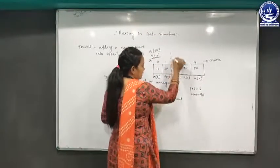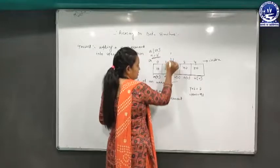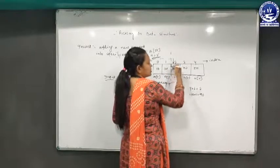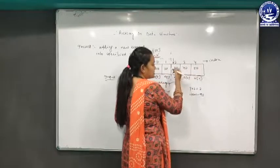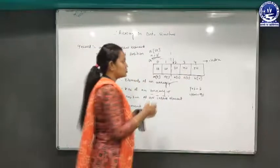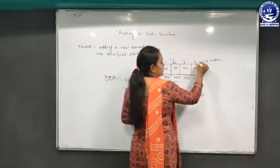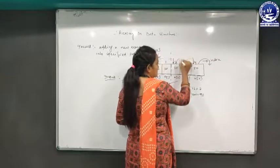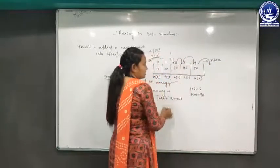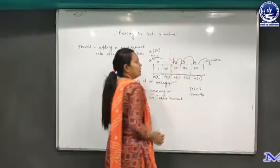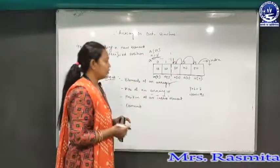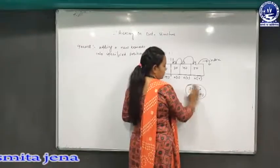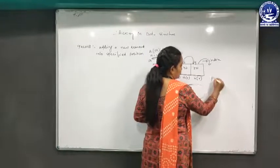For the insertion process, the elements to the left of the position must not be disturbed. We must shift the elements to the right of the insertion position towards the right. First, the rightmost element moves right, then the next, and so on, until the position is free to insert the new element.